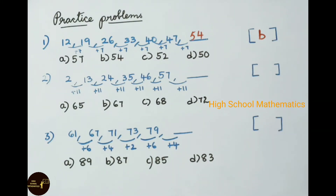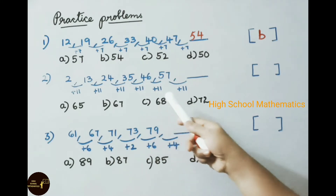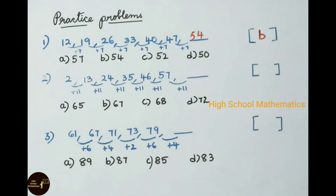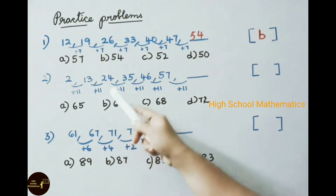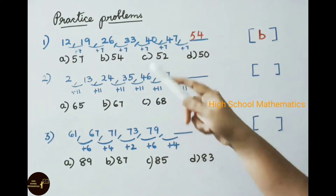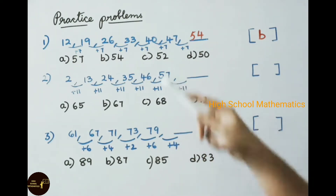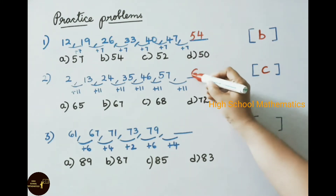Second practice problem: 2, 13, 24, 35, 46, 57 — find the next term. Observe: 2 plus 11 is 13, 13 plus 11 is 24, 24 plus 11 is 35, 35 plus 11 is 46, 46 plus 11 is 57. So 57 plus 11 is 68. The answer is option C, 68.